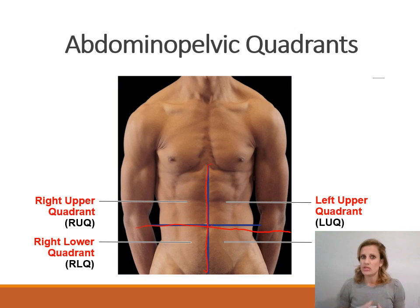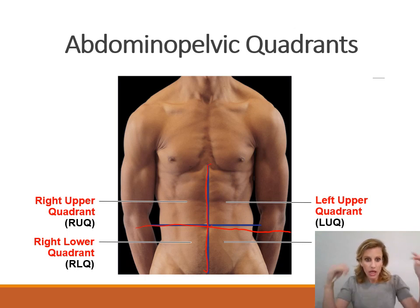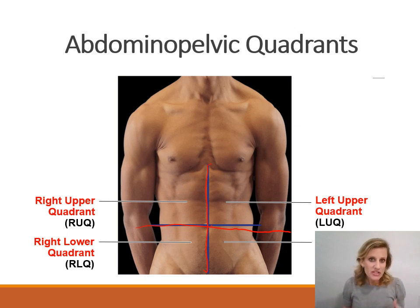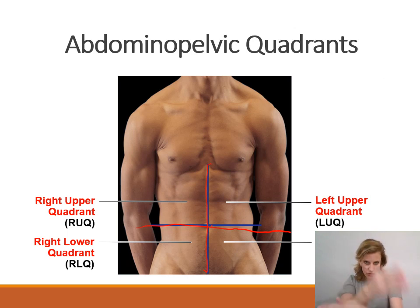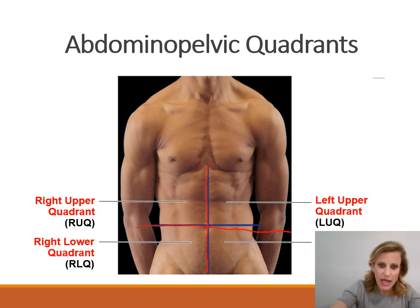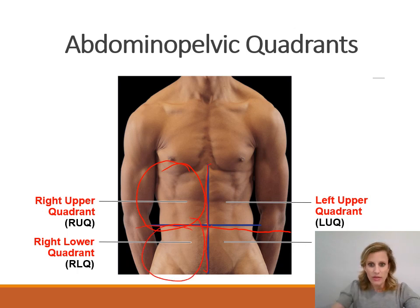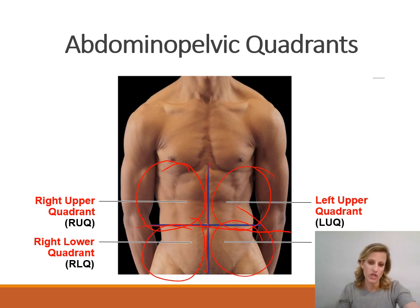Naming them is really easy. We just name them right and left, upper and lower. The only way you could possibly get mixed up is if you confuse right and left — it's not my right and left, it's the patient or the subject's right and left. So crisscross. Looking at this diagram, this is the right upper quadrant and the right lower quadrant, the left upper quadrant and the left lower quadrant.